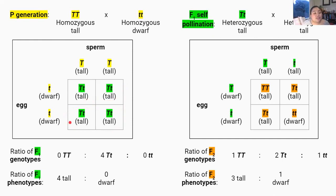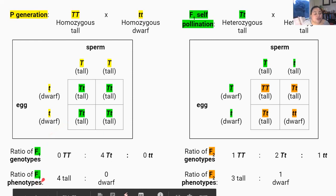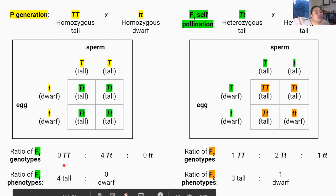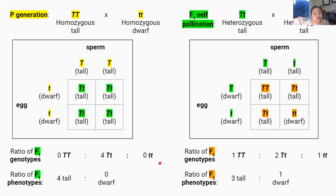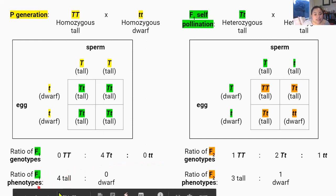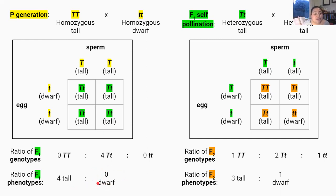Looking at the genotype and phenotype ratios of the F1 generation: the genotype ratio is zero big T big T offspring, four big T little t offspring, and zero little t little t offspring. But the phenotype ratio — the physical features we see — is four tall plants and zero dwarf plants. It's really important to understand the difference between genotype and phenotype ratios.